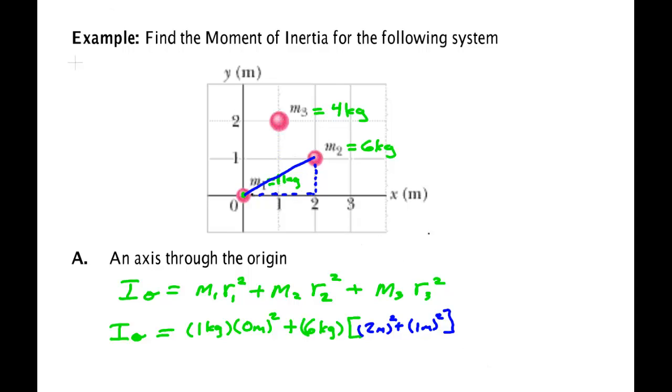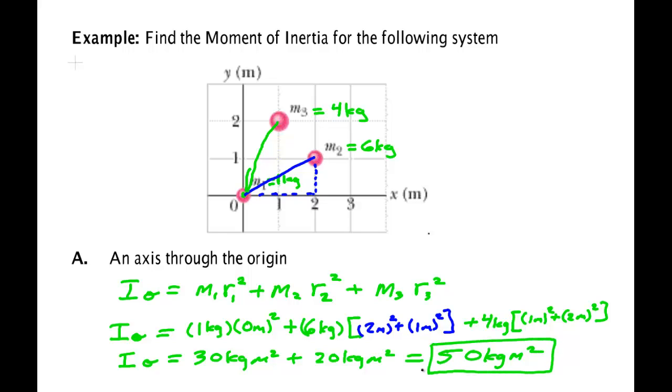Let me change my pen color. Now I'm going up to this one. Four kilograms. It's got one meter in the x and two meters in the y. So the moment of inertia will be equal to, this is zero, this is six times, two squared is four plus one squared is one, that's five. Five times six is thirty kilogram meter squared plus this is also five, five times four is twenty kilogram meter squared. So the total is fifty kilogram meter squared. That's the effective rotational inertia if you try to rotate it about this axis.